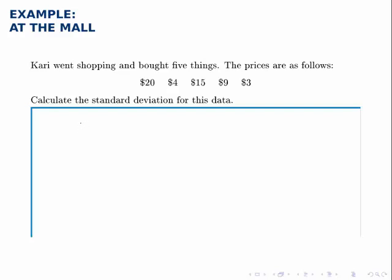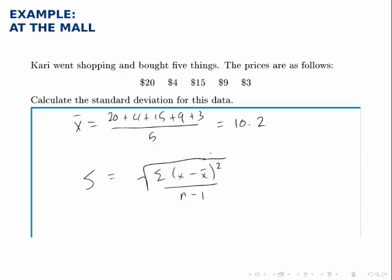The first thing we need to do is to calculate the mean. Remember, the mean is the sum of the data points divided by the number of data points. So we add them up and divide by five and we find that the mean is 10.2.